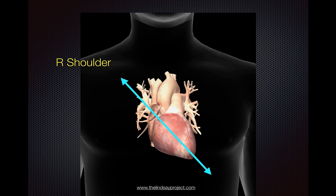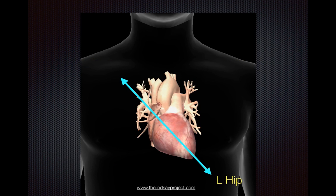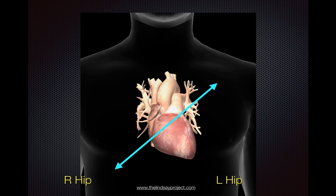As you recall when we were obtaining a parasternal long axis, we were pointing the transducer marker either to the right shoulder or to the left hip depending on what convention you were using. Under the cardiology convention, the transducer marker points towards the patient's right shoulder, and then to get a short axis from that, all you have to do is rotate the transducer 90 degrees clockwise and point it towards the left shoulder. Alternatively, if you had the transducer pointing towards the left hip under the emergency or abdominal setting, you rotate 90 degrees and point it towards the patient's right hip instead.